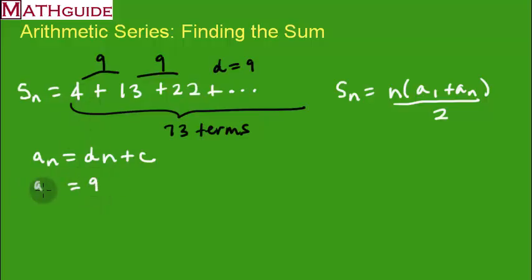We know for our first term, that's a1. Our first term, that means n is 1. We replace the n with 1. We know what a1 is equal to. We know a1 is equal to 4. So we're going to use this equation to get our constant.